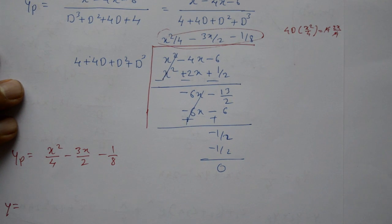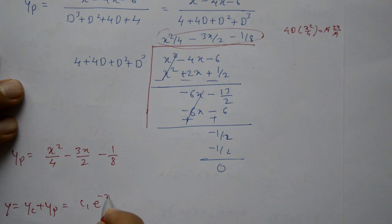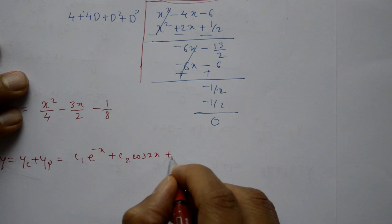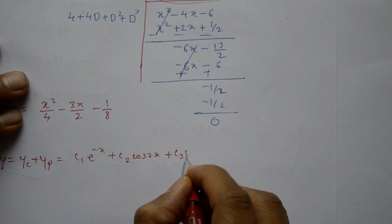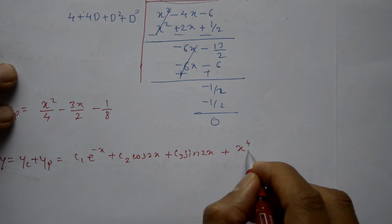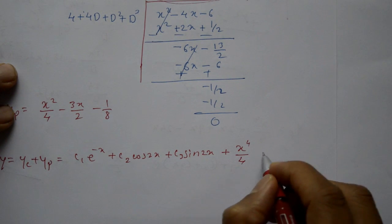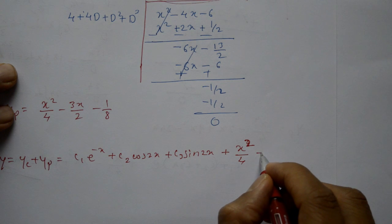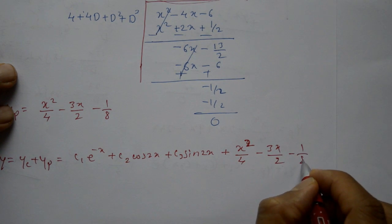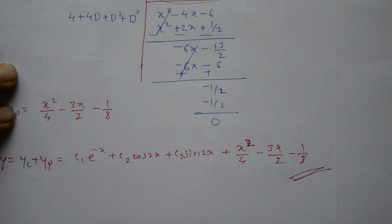Now the complete solution is y = Yc + Yp = c₁e^(-x) + c₂cos(2x) + c₃sin(2x) + x²/4 - 3x/2 - 1/8. This is the required complete solution.